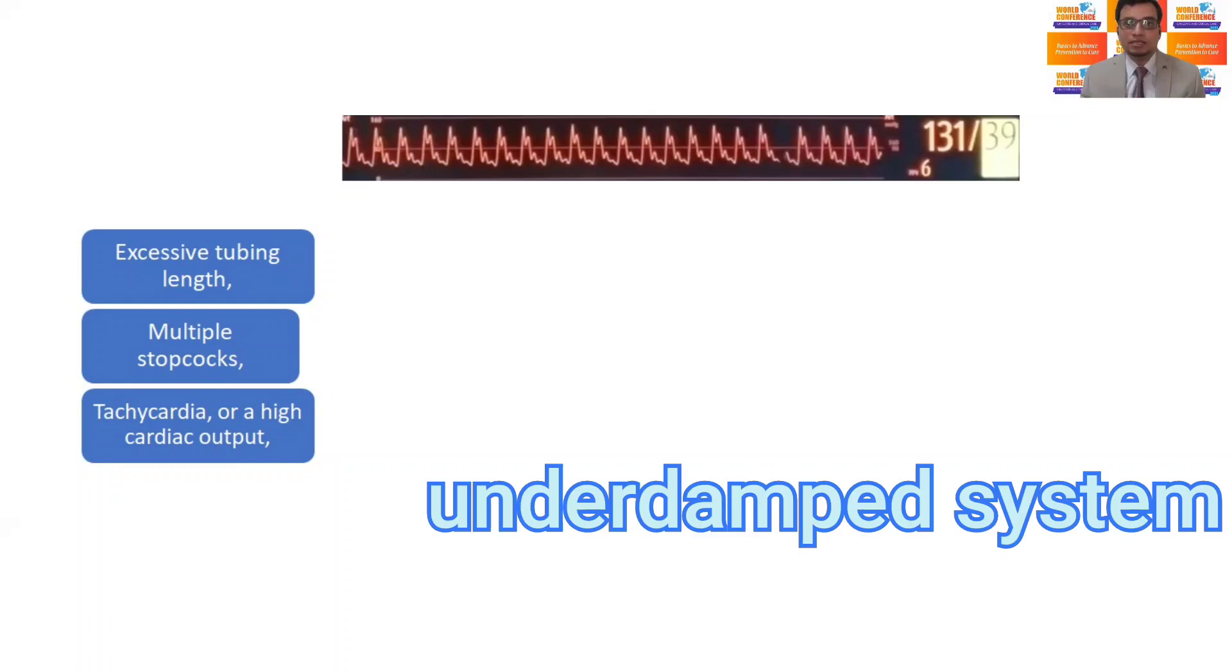The main reasons for the under-damped system are excessive tubing length, multiple stopcocks, over-connections, and hyperdynamic circulations.